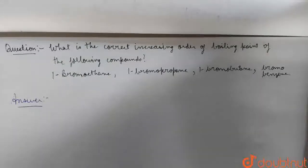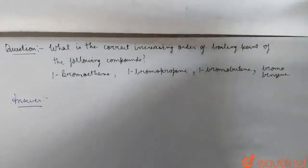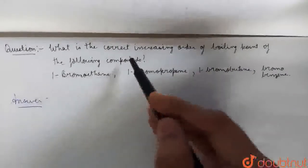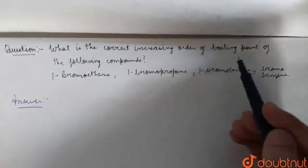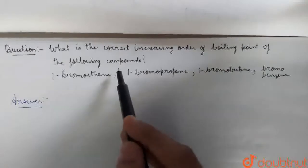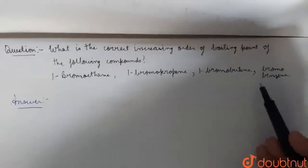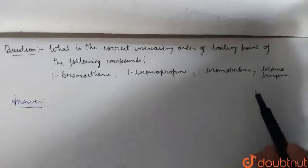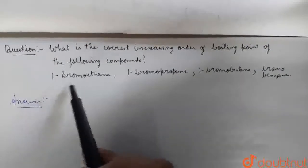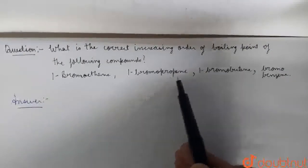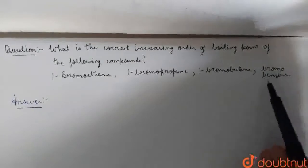Today, I am going to discuss a question with you all, which I have taken from the chapter of Haloalkanes and Haloarenes. Let us see the question. The question says, what is the correct increasing order of boiling point of the following compounds? We have 4 compounds. Now, we have to write increasing order. The compounds are: 1-Bromoethane, 1-Bromopropane, 1-Bromobutane and Bromobenzene.